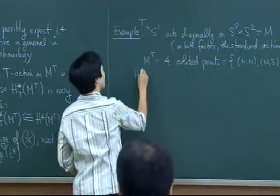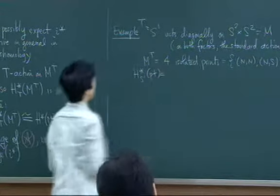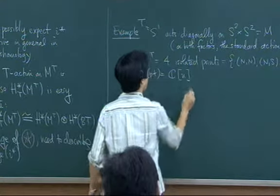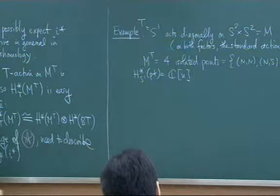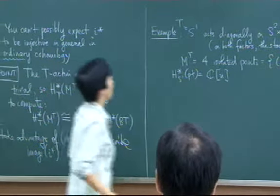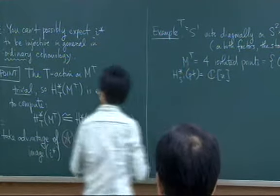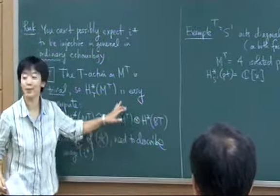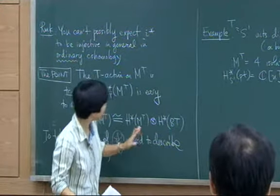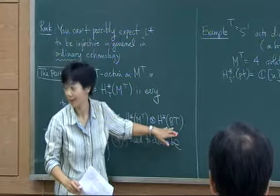Please recall: H_{S1} of a point is a polynomial ring in one variable, because it's just CP-infinity. And in this case, because it is four isolated points, this is a very simple ring — it's just four copies of C. In other words, what I have is four copies of the polynomial ring in one variable.